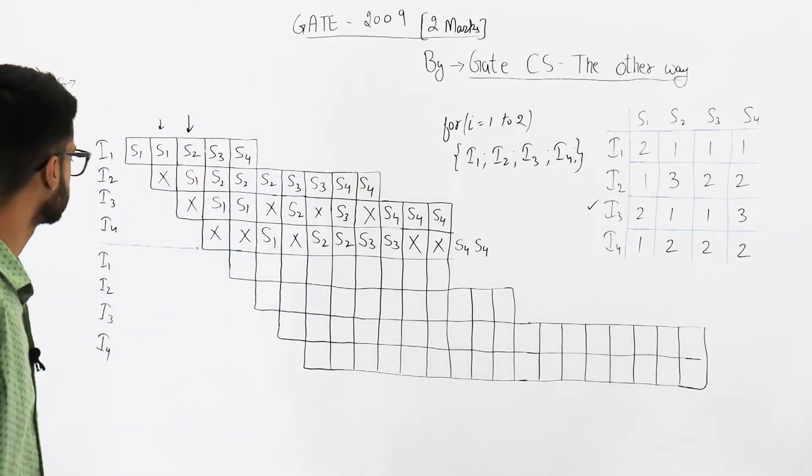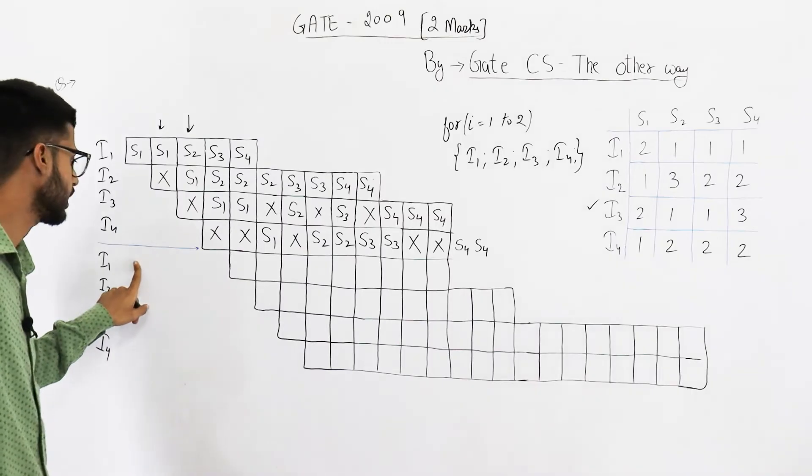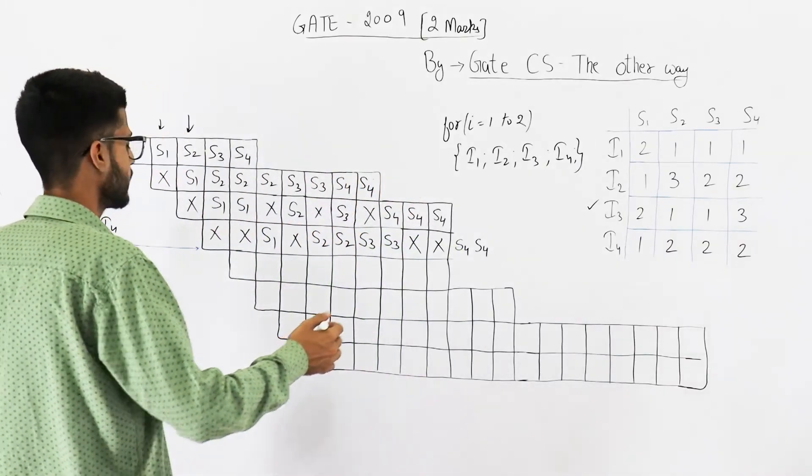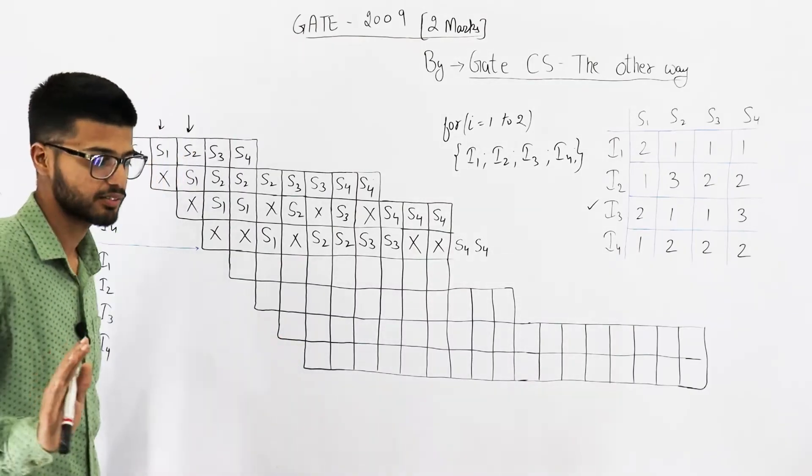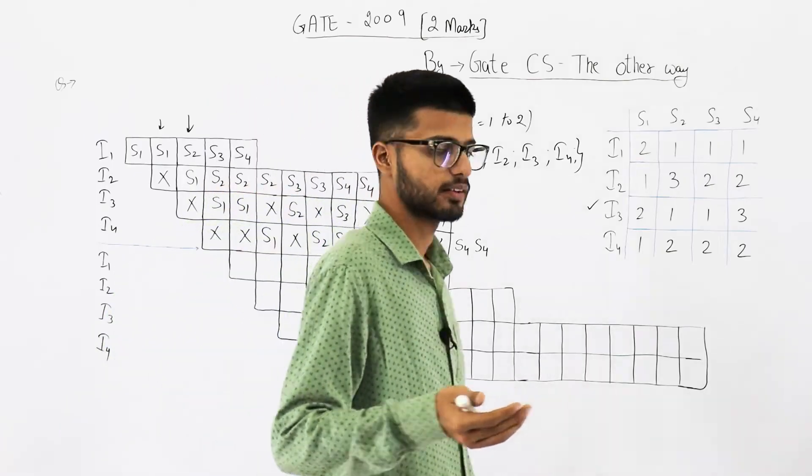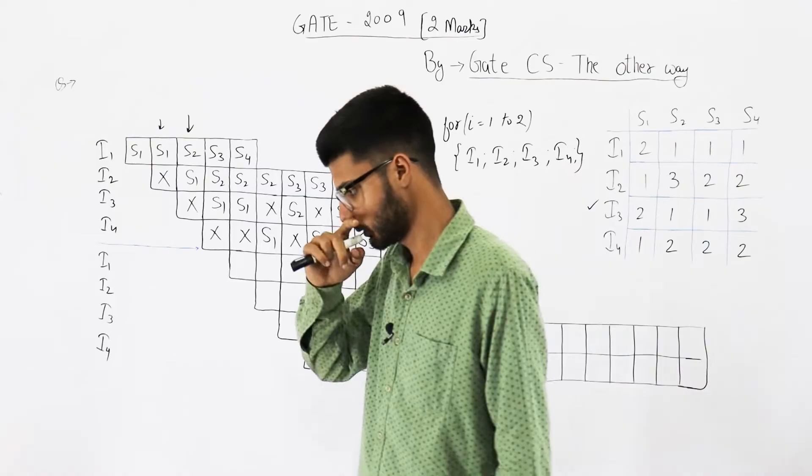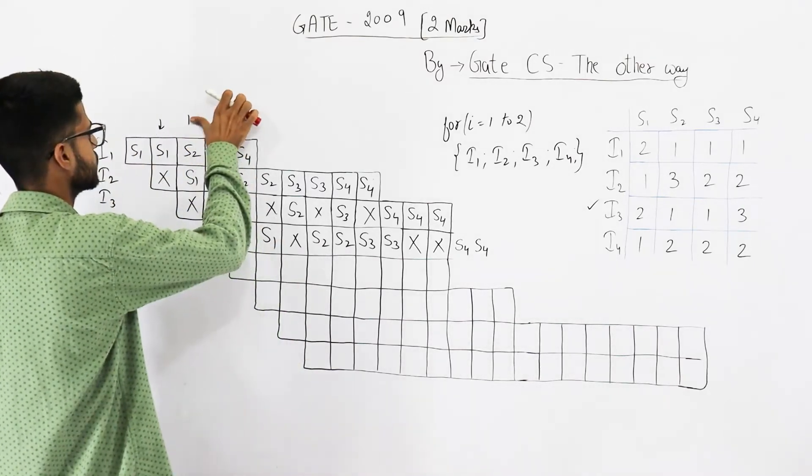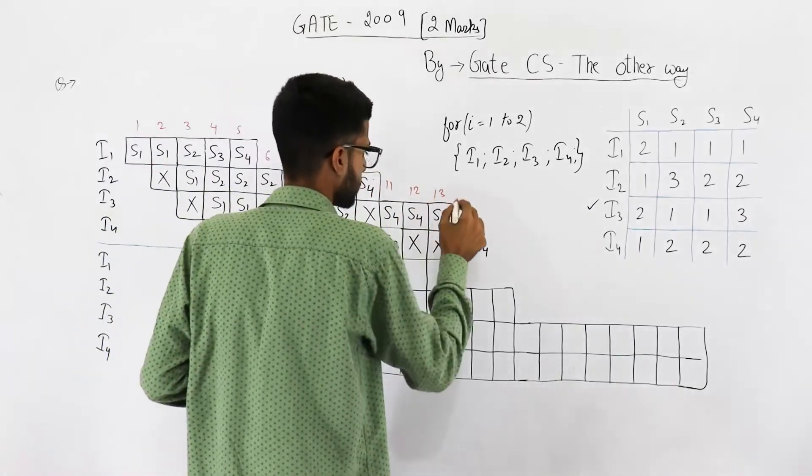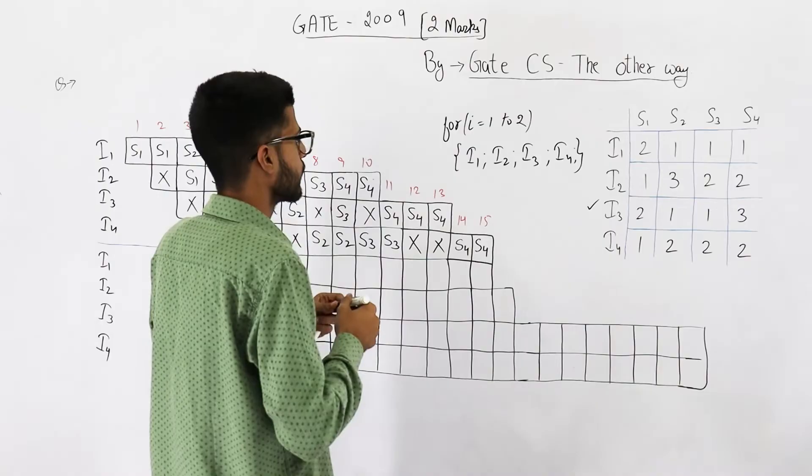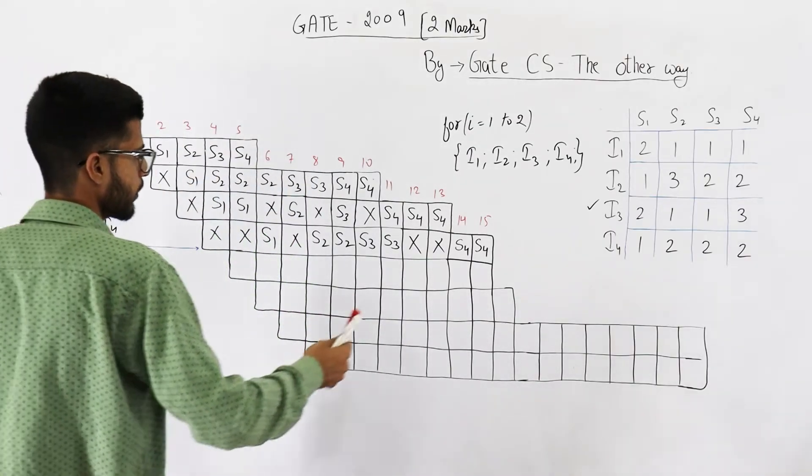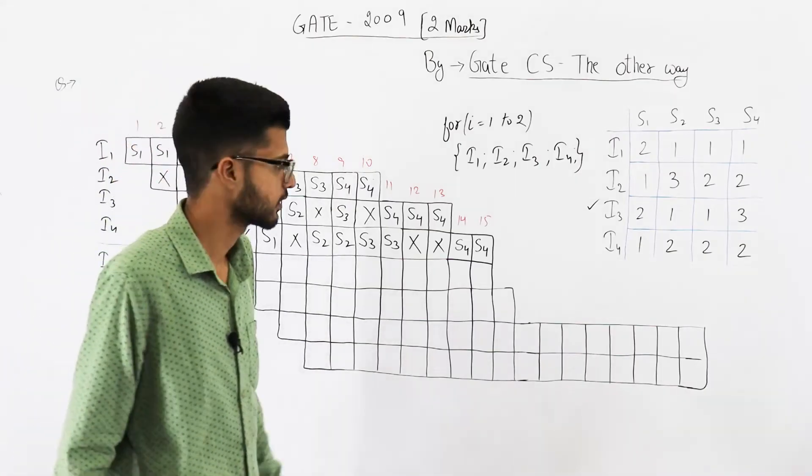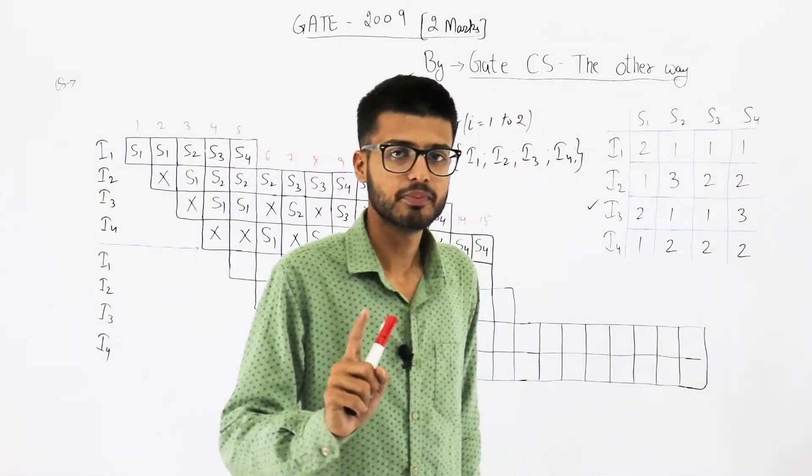One s1, two s2s are done, then we need to write two s3s, two s3s, and then two s4s. Now s4 cannot be written here, that means s4 is going to come here like this. Then again we need to start from instruction i1. Now most of the books what they are doing is they just calculate the number of cycles required till here and multiply it by two. That's a very big mistake, it's a blunder. A very famous book has given the answer in the similar way - it's wrong.